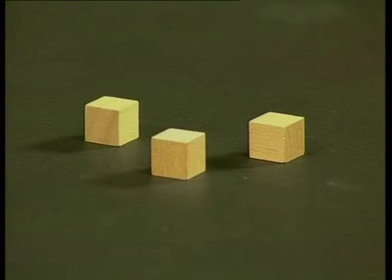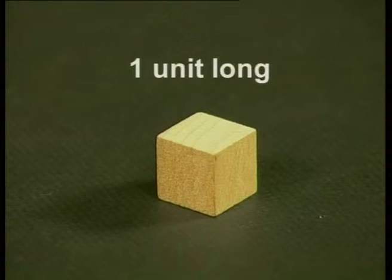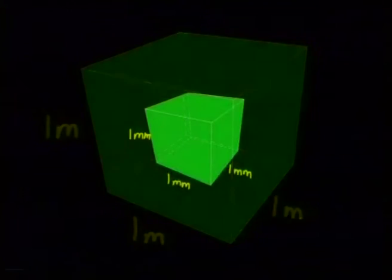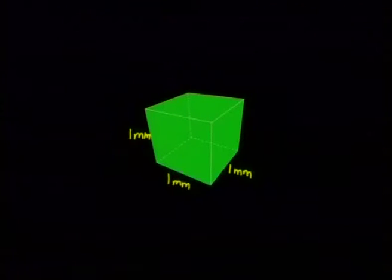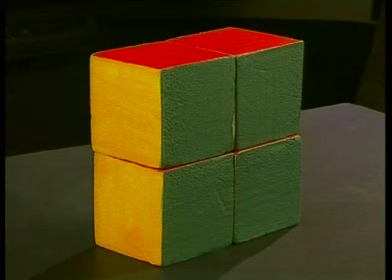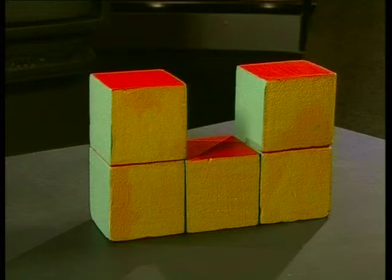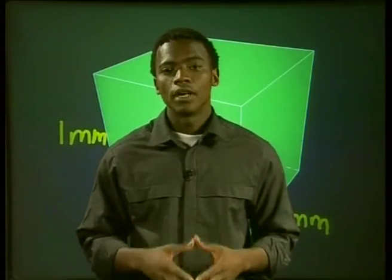The standard unit of measurement for volume is a unit cube — a cube with each edge 1 unit long. The unit could be 1 centimeter, 1 meter, or 1 millimeter, but all edges must be the same, 1 unit long. A solid composed of 4 unit cubes has a volume of 4 cubic units. The volume of a solid is a number showing how many cubic units it contains. For example, a structure made of 5 unit cubes has a volume of 5 cubic units.